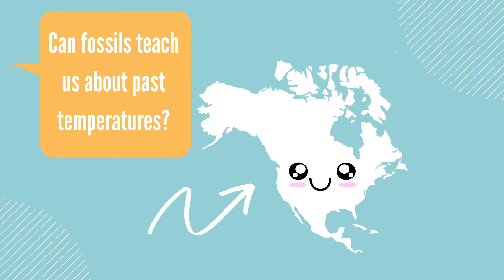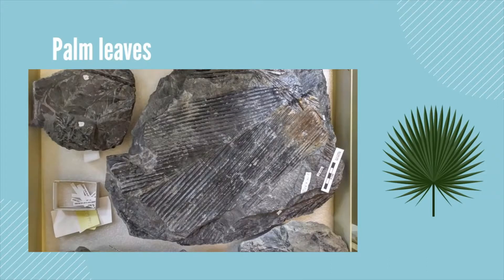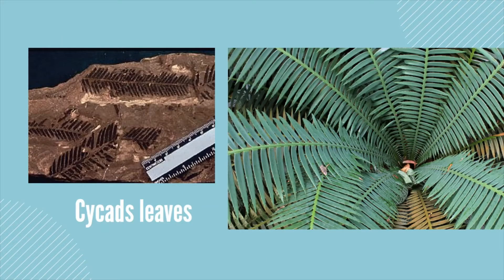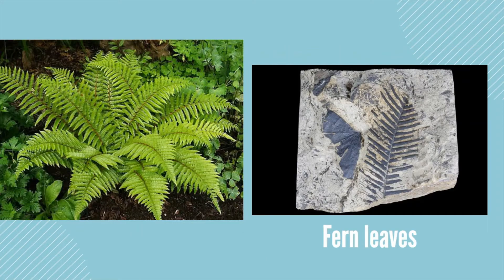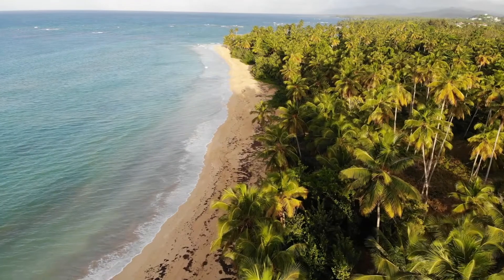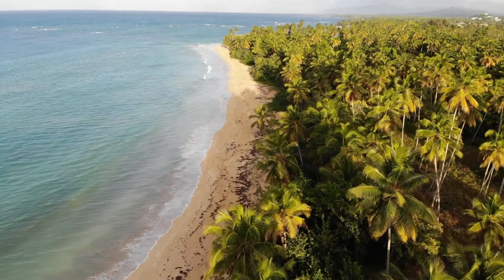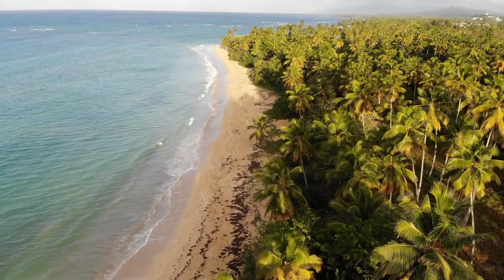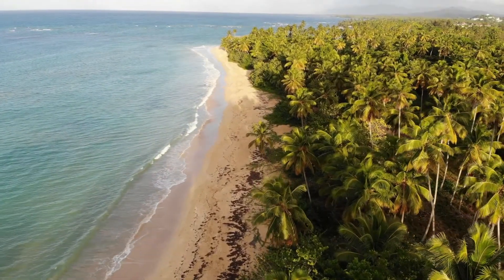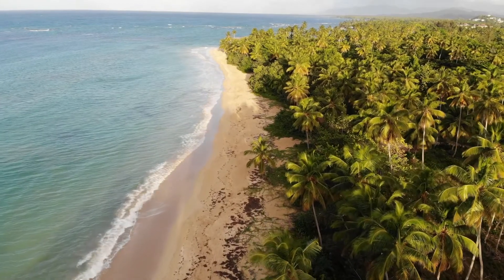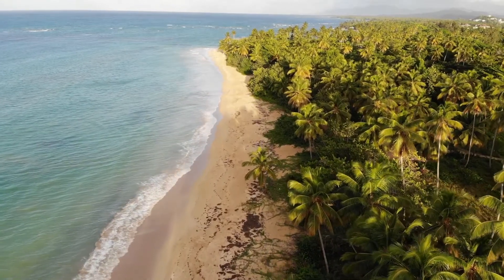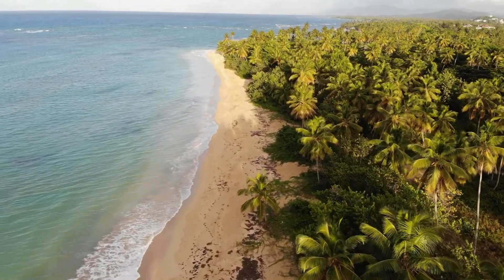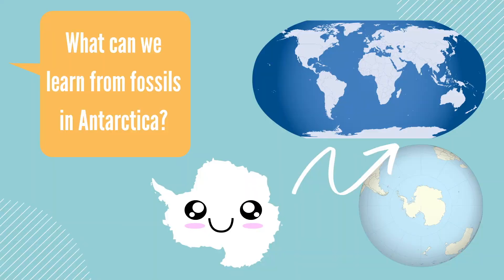For instance, we know that Canada today is cold, but during the period of dinosaurs millions of years ago, we know the temperature used to be much warmer because we can find fossilized palm leaves, cycad leaves, and fern leaves. These leaves are important because they show that Canada had a different environment millions of years ago. The fossilized palm leaves, cycad leaves, and fern leaves show that the prehistoric environment was tropical.